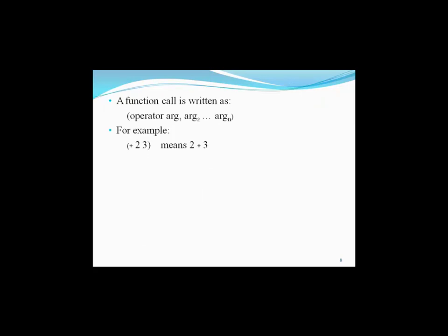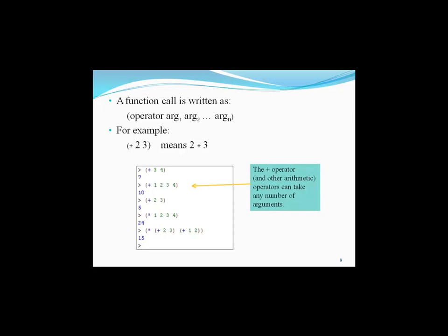Now, we'll see how a function call can be written. A function call is written as: operator, argument 1, argument 2, ... argument n. So for a single operator, you can have more than one argument. For example, 2 + 3 can be written as (+ 2 3). The plus operator can take any number of arguments. And (+ 2 (* 3 (+ 1 2))) is the same as 2 + 3 × (1 + 2). Here, we have used parentheses to control the execution.